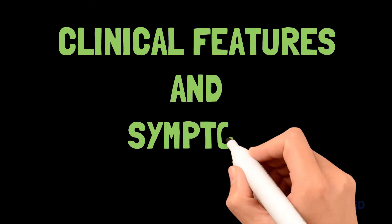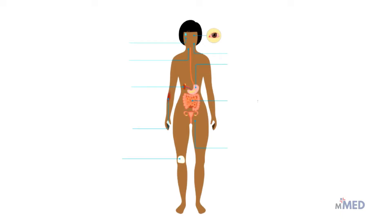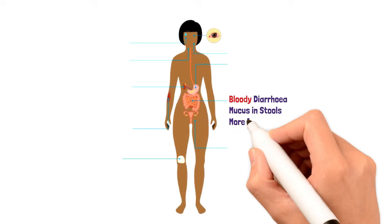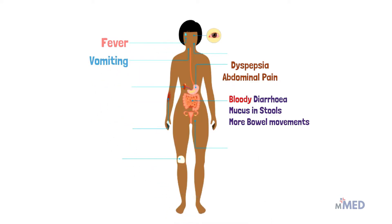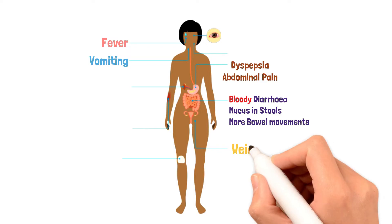Patients with ulcerative colitis almost always present with diarrhea, sometimes with blood, and there is mucus in the stools. Bowel movements are frequent and small in volume as a result of rectal inflammation. These patients commonly present with abdominal pain, classically on the left side, which reflects the location of the distal sigmoid colon.